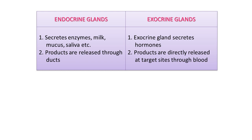Exocrine glands secrete enzymes, milk, mucus, and saliva. Endocrine glands secrete hormones. The product of exocrine glands is released through a duct, while endocrine gland secretions — hormones — are released directly at the targeted site.